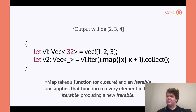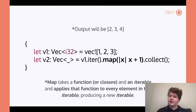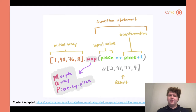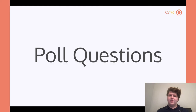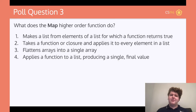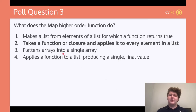If you have any questions about that, given that a high percentage of people got that one wrong, please let me know in Twitch chat or in Discord chat. So that is the map function — remember, it takes a function or some sort of closure and applies it to every element in the list.